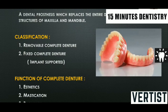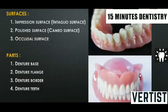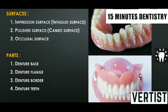The functions of a complete denture are aesthetics, mastication, and phonetics — these are the primary purposes. A complete denture has the following surfaces: an impression surface, also called the intaglio surface; a polished surface; and an occlusal surface.